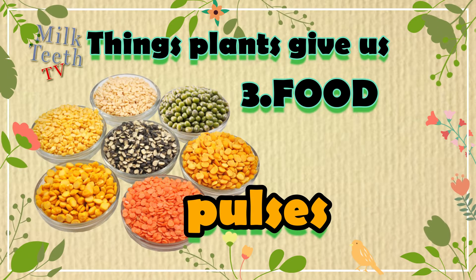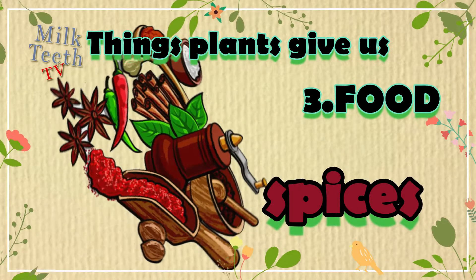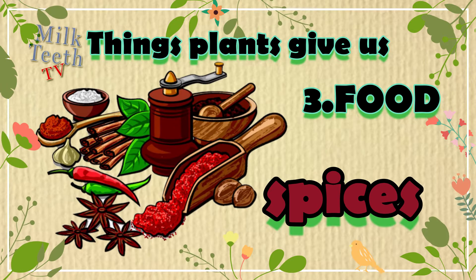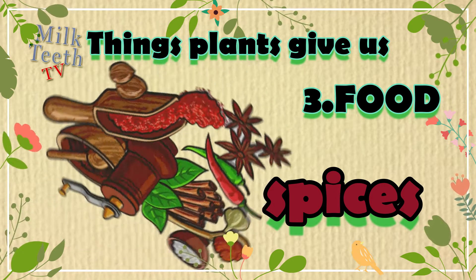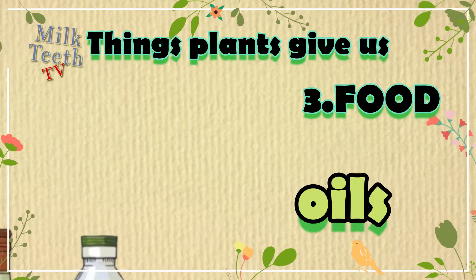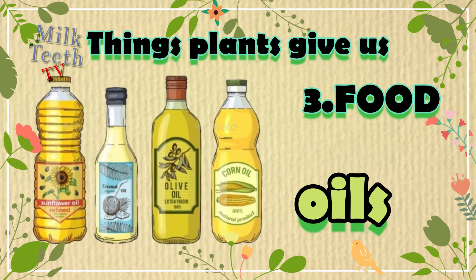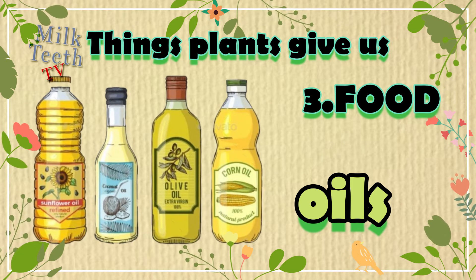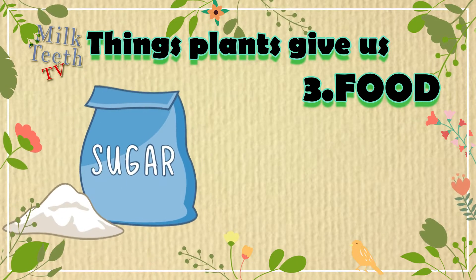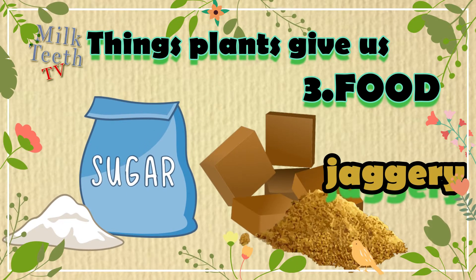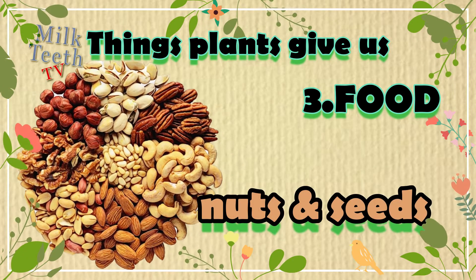Pulses or lentils are also produced by plants. Spices like red chili, garlic, cinnamon, and nutmeg. Edible oils like sunflower oil, olive oil, coconut oil, corn oil, and soybean oil. The sugarcane plant also gives us sugar and jaggery.